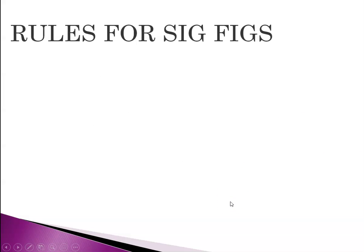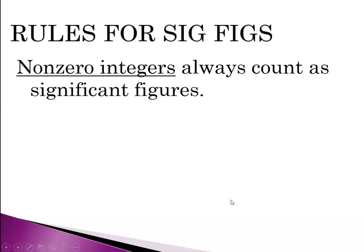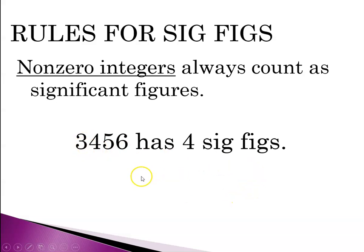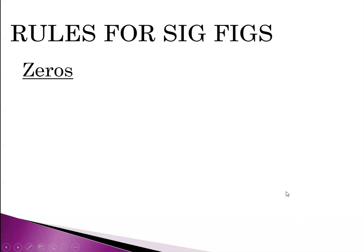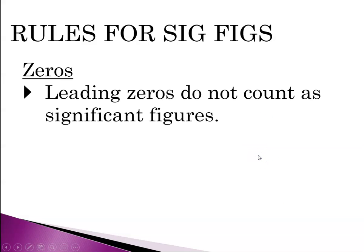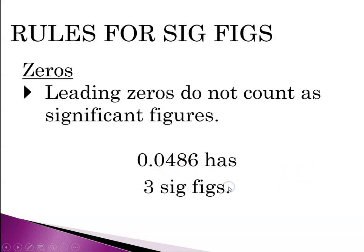Let's go through the rules. First, non-zero integers: all non-zero integers count as significant figures — significant figures and significant digits are interchangeable. So the number 3456 has 4 significant figures. Now zeros are tricky — there are three kinds. We'll start with leading zeros: they do not count as significant figures. So the number 0.0486 has only 3 significant figures.